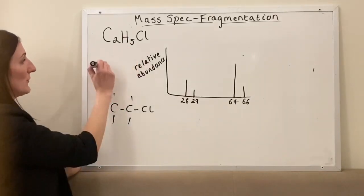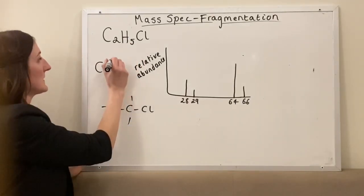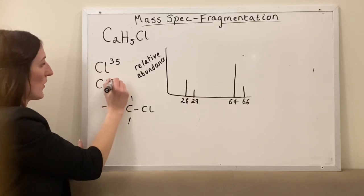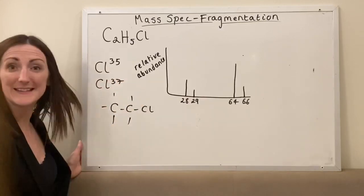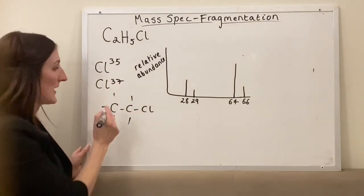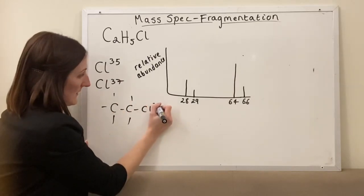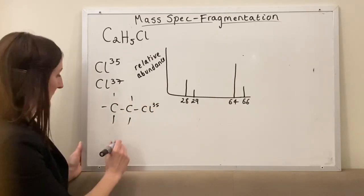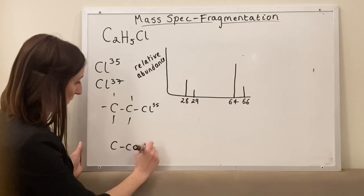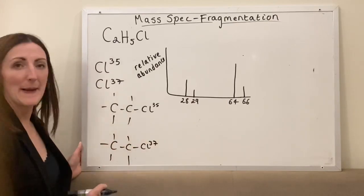We have to remember that chlorine has two isotopes: it has one that weighs 35 and it has one that weighs 37. So this molecule — this example might be that the chlorine on it weighs 35, and we could then have another one where our chlorine weighs 37.